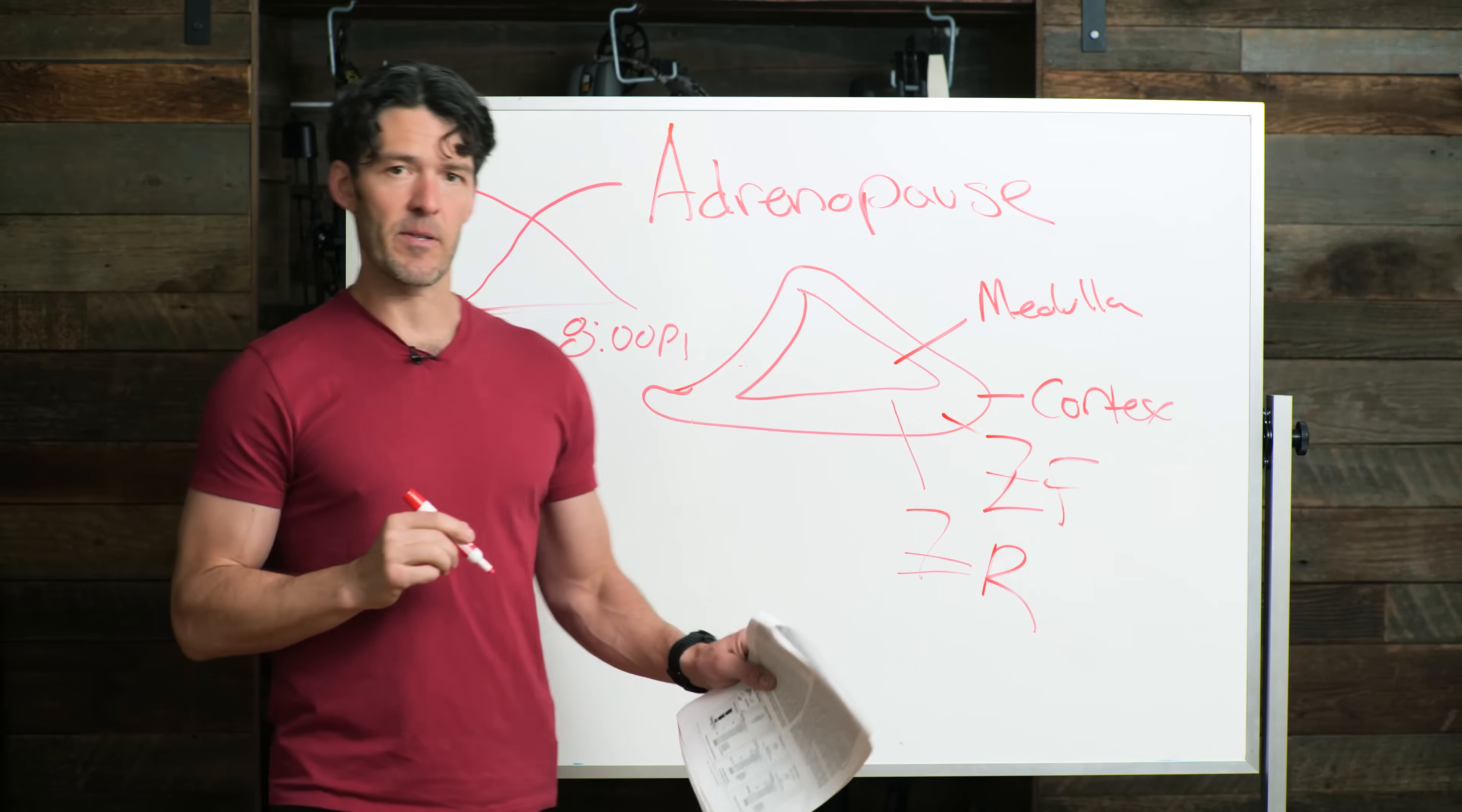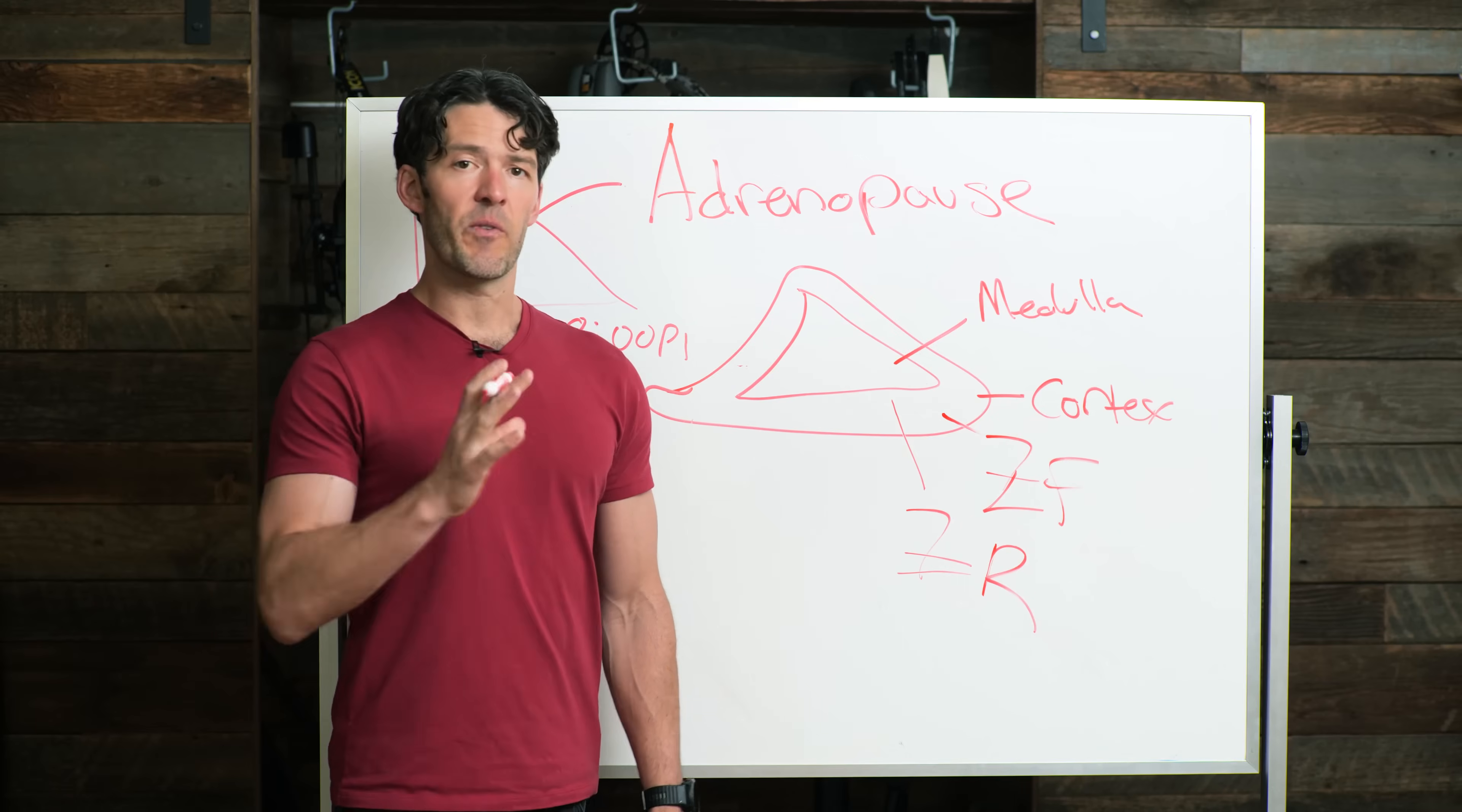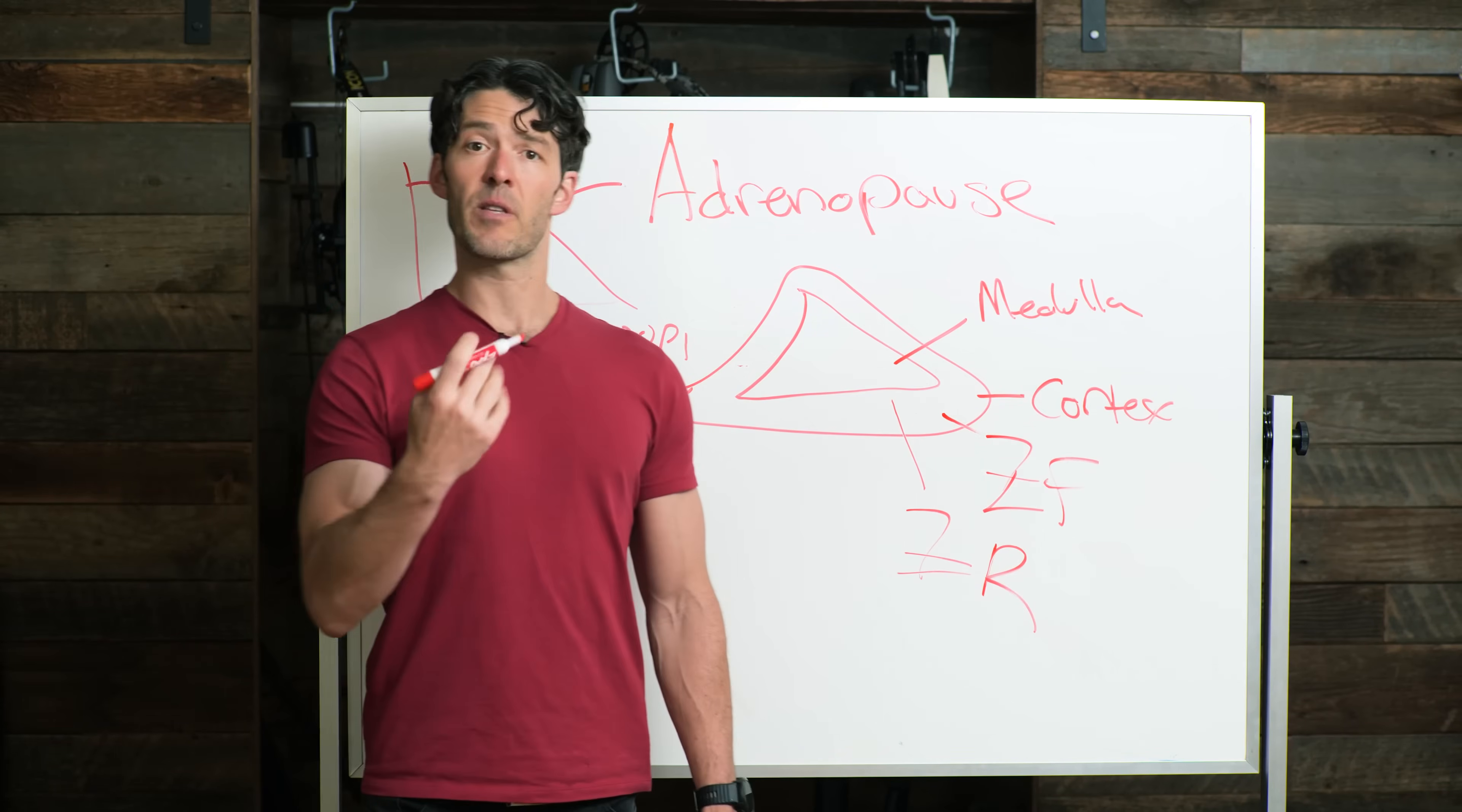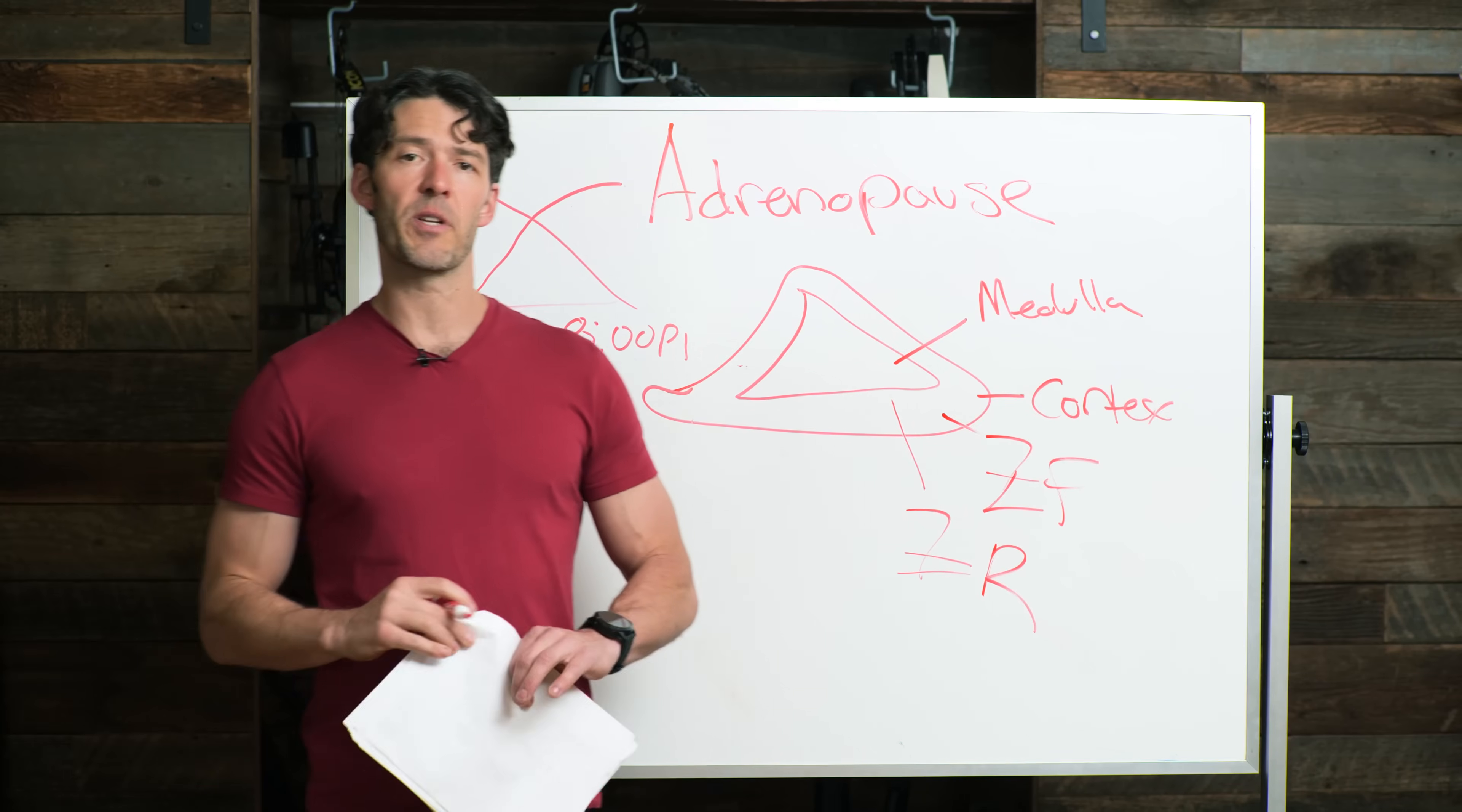But what also happens, my friends, is within this zona reticularis, which is where DHEA - which is sort of this mother hormone that feeds into both estrogens and other androgens, we've talked about this before on other videos - this region of the adrenal glands can sort of atrophy or go into this adrenopause, which can be linked with suboptimal testosterone, poor immunologic responses, aberrant changes in estrogen, vaginal dryness, and all these things. So this is something we should be more aware of, we should pay more attention to.